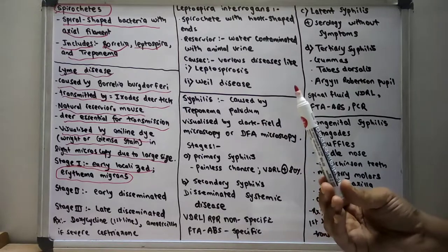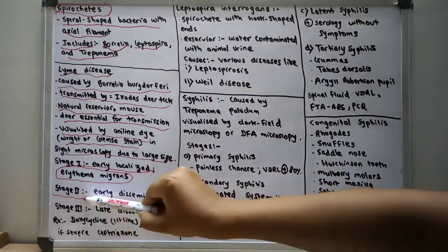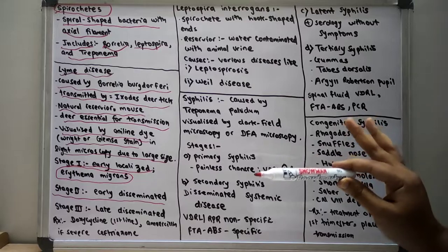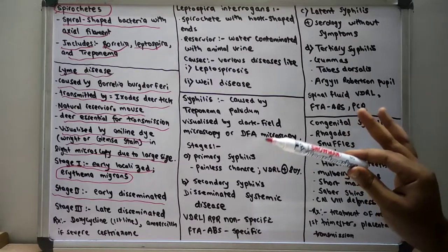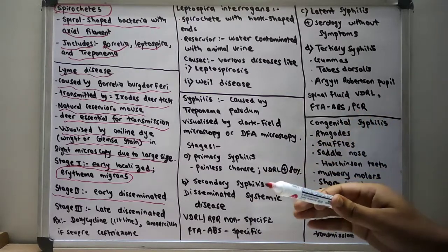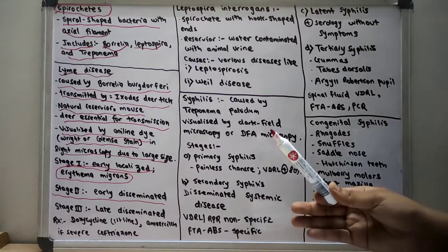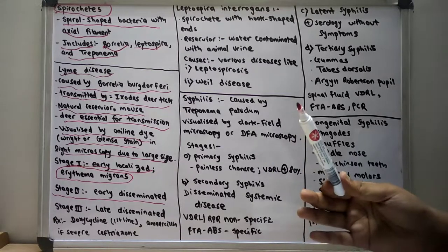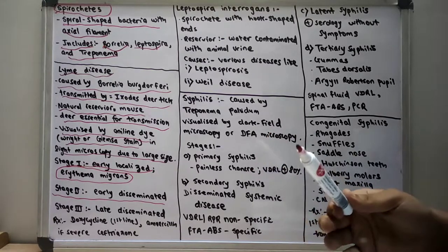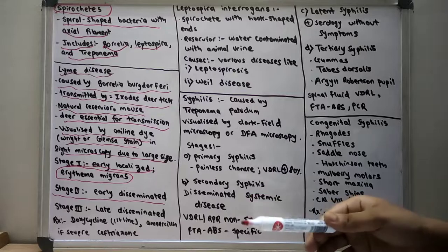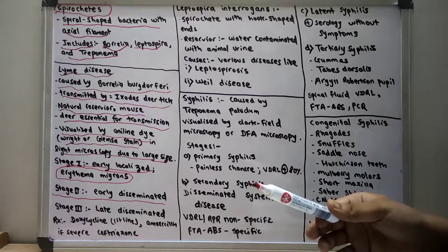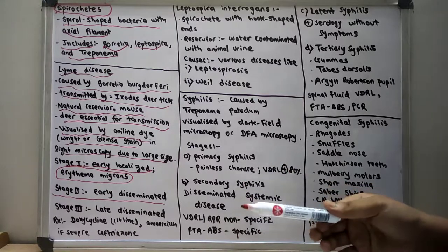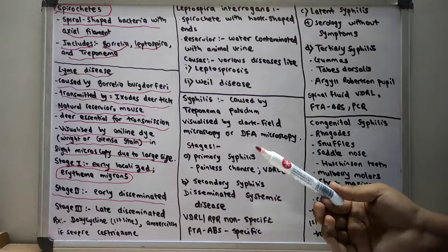Stage two is known as the early disseminated stage. In this stage there is presence of secondary lesions, features of carditis, atrioventricular block, facial nerve palsy, migratory myalgia, and there could also be transient arthritis.